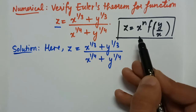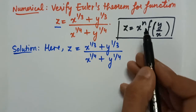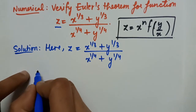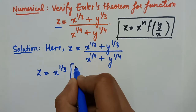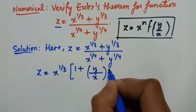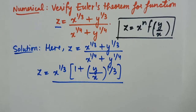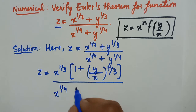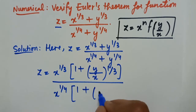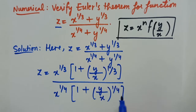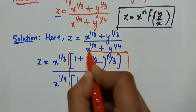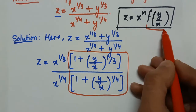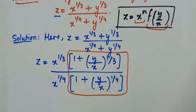We need to represent z in the form x^n · f(y/x). From the numerator, we take x^(1/3) common, leaving (1 + (y/x)^(1/3)) in the bracket. Similarly from the denominator we take x^(1/4) common, leaving (1 + (y/x)^(1/4)) in the bracket. The bracketed terms form a function f(y/x).